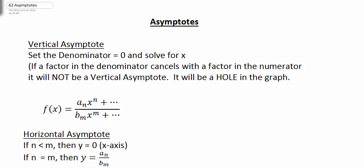Quickly to review: the vertical asymptote is found by simply setting the denominator equal to zero and solving for x. There's only one situation we have to be concerned with — if a factor in the denominator cancels a factor in the numerator, there will not be a vertical asymptote. There will simply be a hole in the graph at that point.